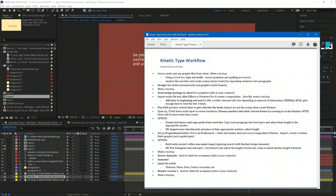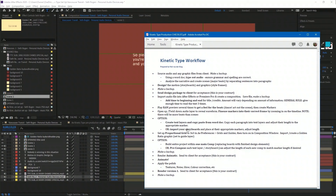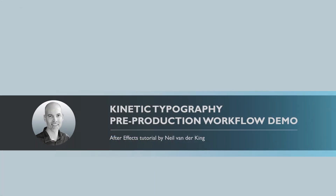There are a couple of different ways to approach this workflow, but following this checklist will help. You can create text layers as I did here, or import your storyboards and adjust those elements to fit, then pre-compose each scene and keep going. I'll leave it there — thanks everyone!